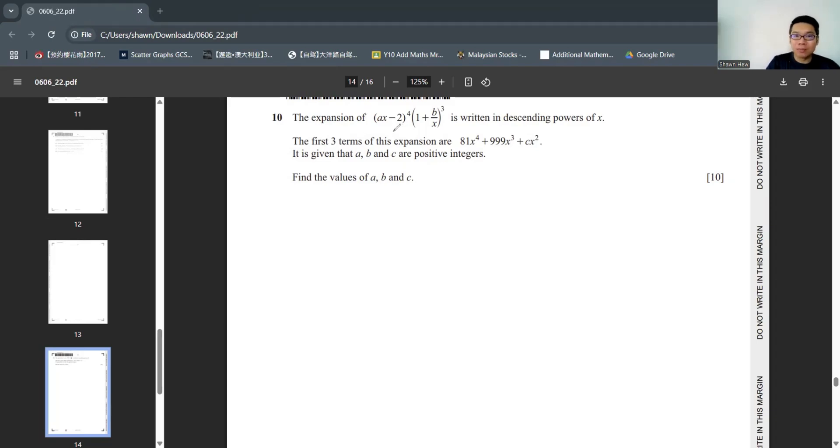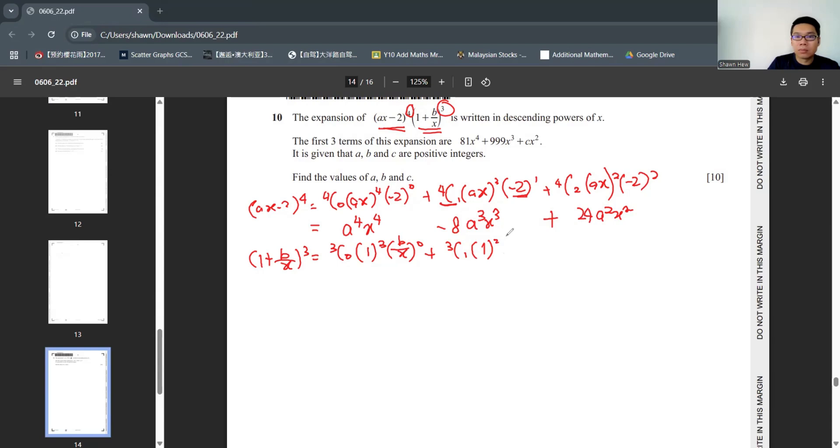Question 10. Binomial expansion. When there is 2 brackets. We finding the relationship. So the first thing is. We need to ensure everything power 1. Not power 4. Not power 3. So we need to expand both of them. For this part. 4 times minus 2 minus 8. Key in calculator times minus 2 squared. Remember it will confirm become positive. So 24 a squared x squared. And then same go to this. Then we find the relationship between this and this. And compare with this. After you relate these two equations. It will form the first three terms of this. It's the coefficient of x^4, x^3, x^2. So we can use x^4 to start first.